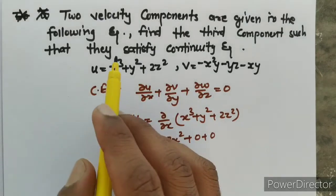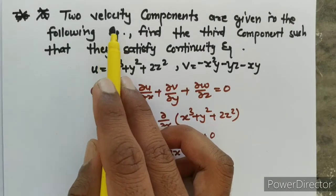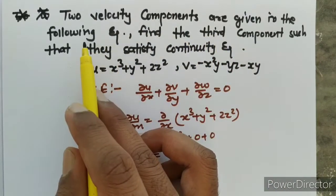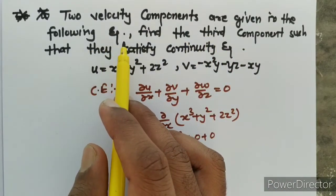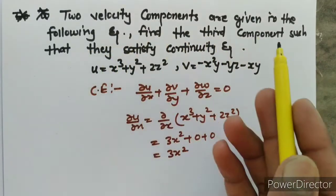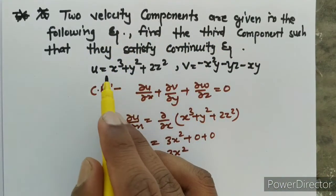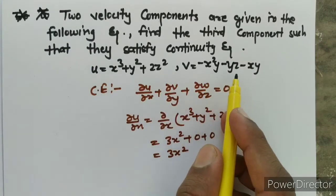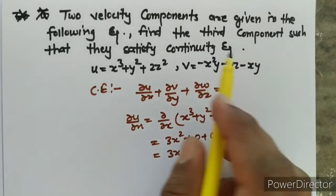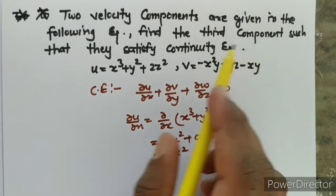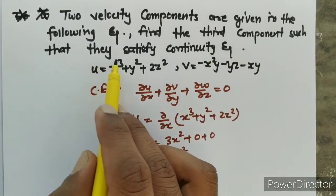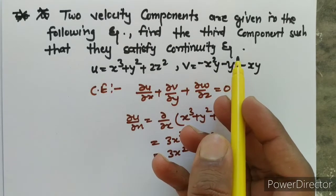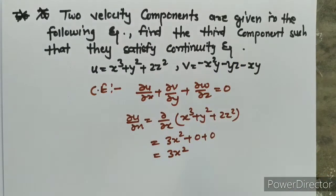Our numerical says two velocity components are given in the following equation. Two velocity components have been given: one is u and one is v.